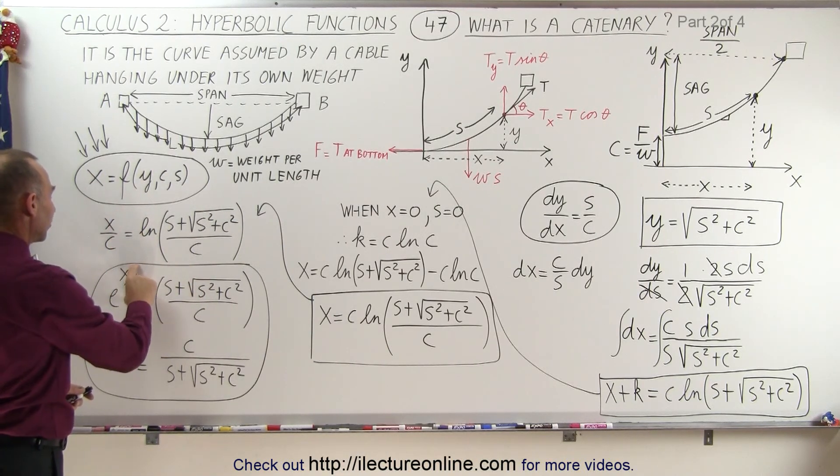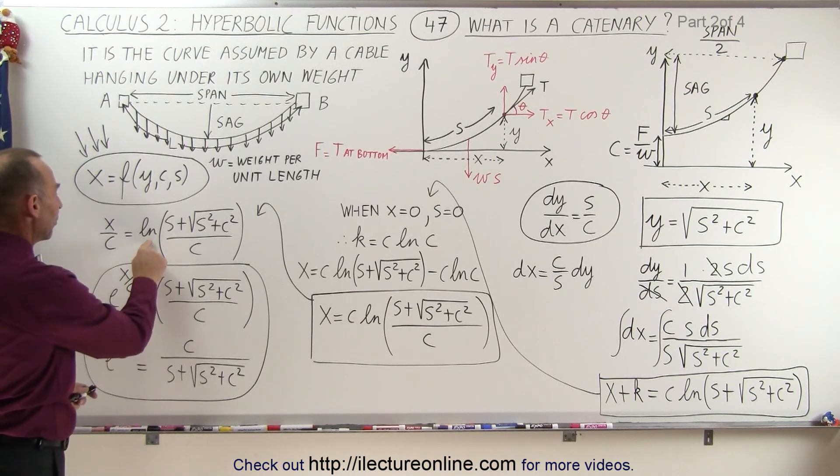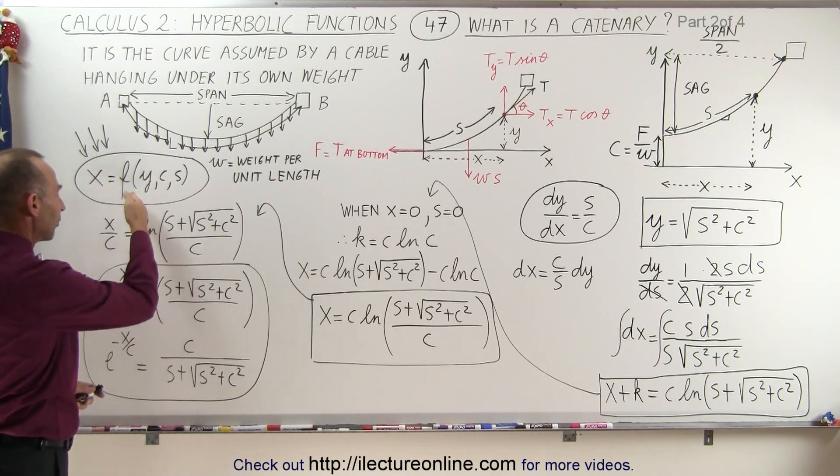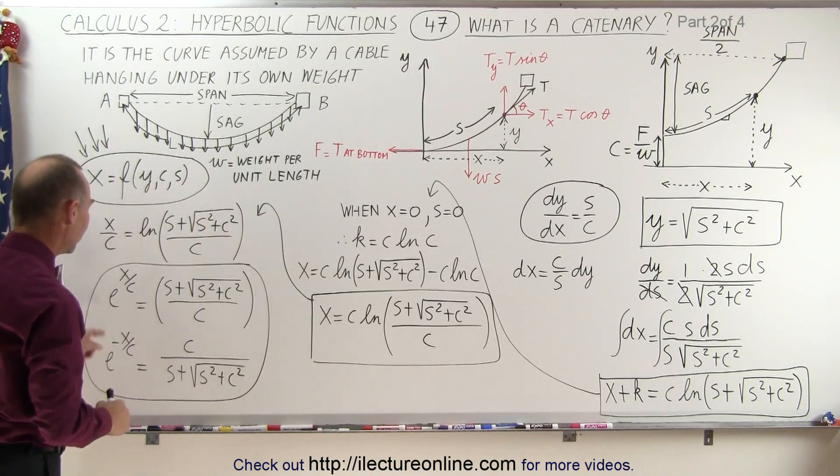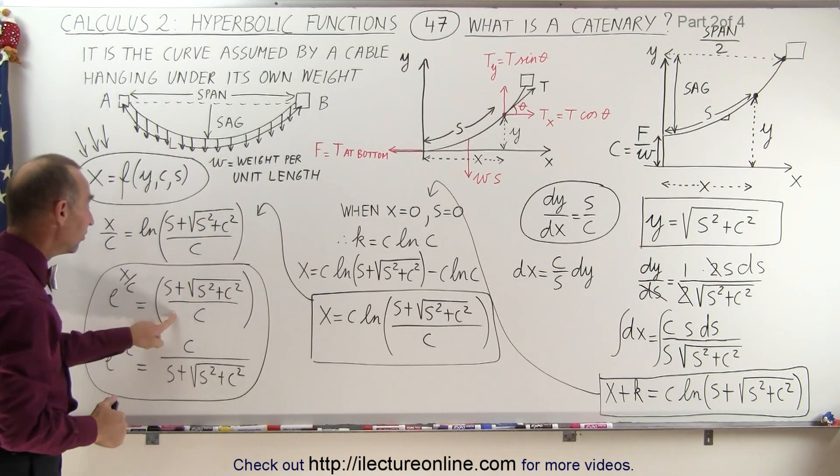We take the left side and use the exponent of the base e, and the right side, e to the natural log, of course, that negates that, and we get what's inside the parentheses here. So now we have e to the x over c is equal to this.